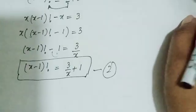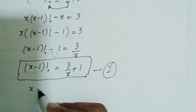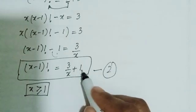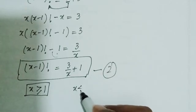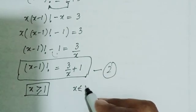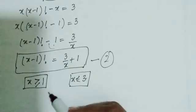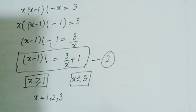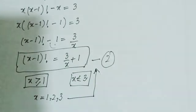From this equation we can conclude that since (x minus 1) factorial must be defined, x is greater than or equal to 1. Also, since 3 over x plus 1 must be a positive factorial value, x is less than or equal to 3. So the possible values of x are 1, 2, and 3. Let's check these values by substituting them into equation number 2 one by one.